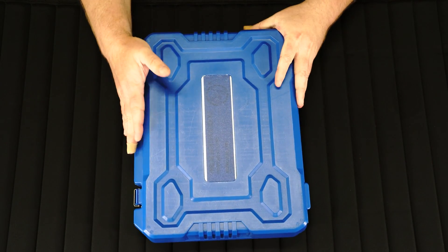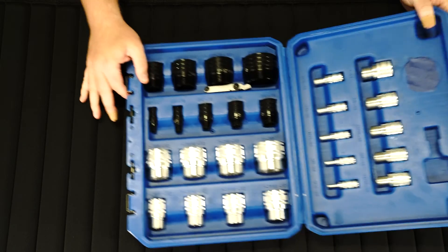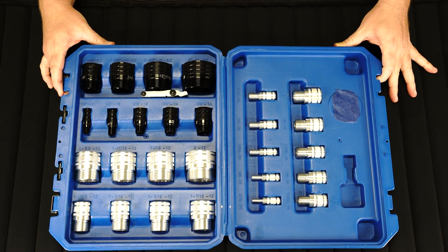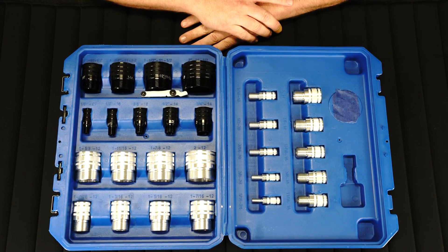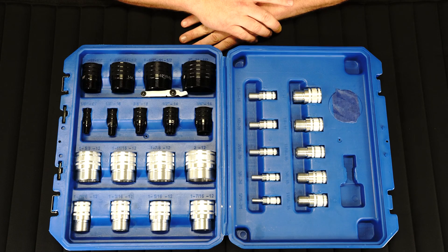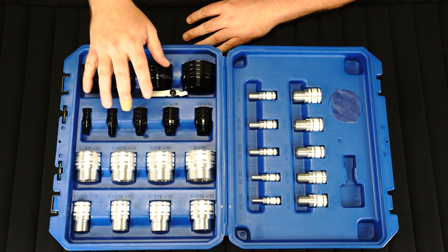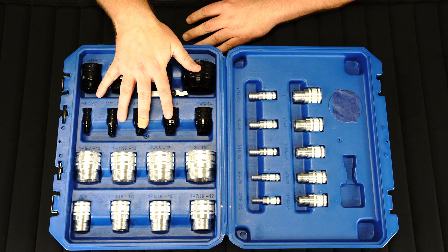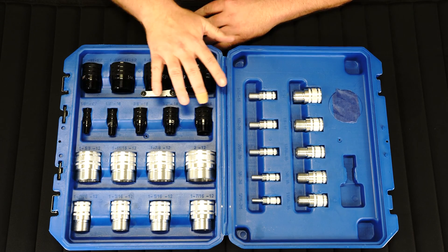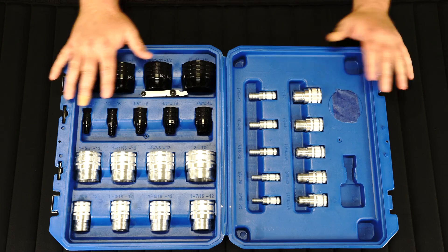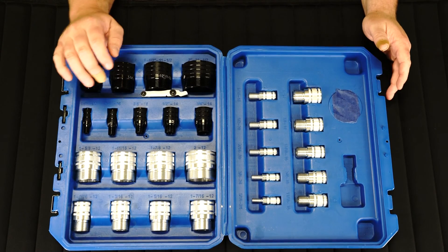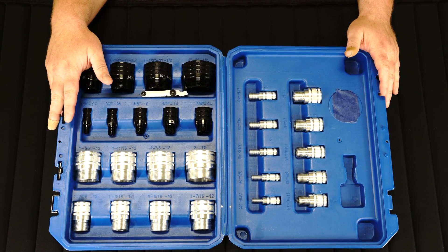If we open this up here, you can see there's several different thread sizes. We have SAE or what is called UNF. We have NPT, National Pipe Thread. There's several different kits for different threads. This particular one is going to be UNF and NPT which is National Pipe Thread and O-Ring Boss.